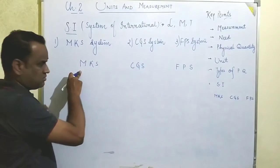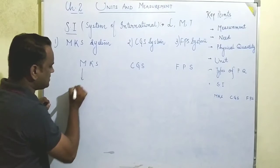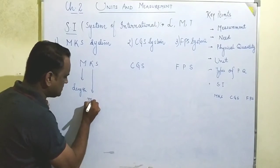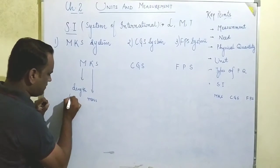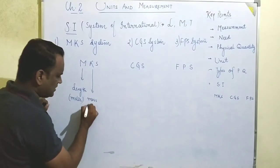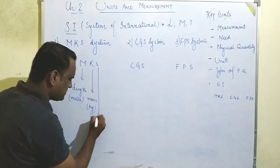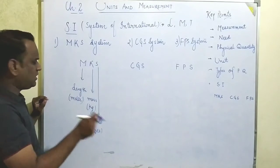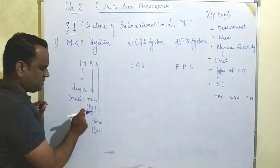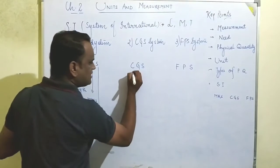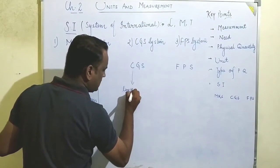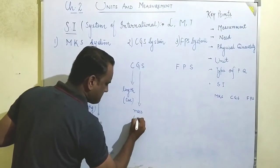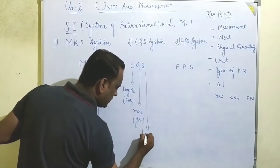In the MKS system, M stands for meter — so length is measured in meter, K stands for kilogram — so mass is measured in kilogram, and time is measured in seconds. In the CGS system, length will be measured in centimeter, mass will be measured in gram, and time will be measured in second.